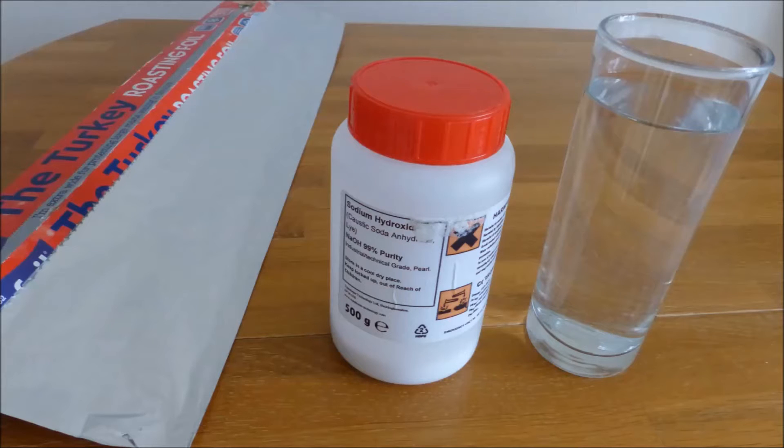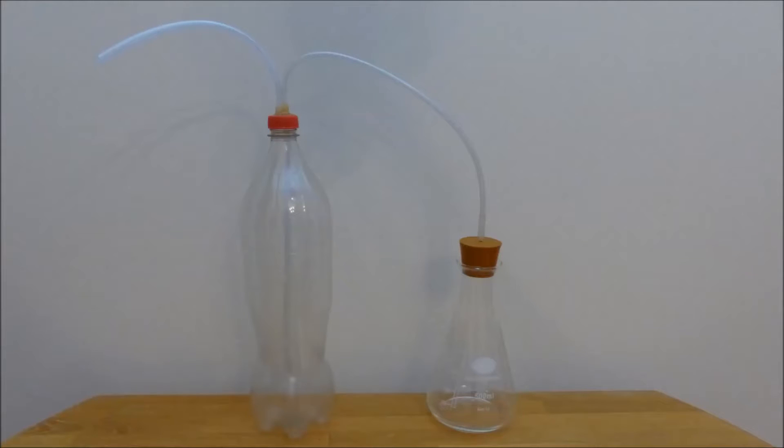To make the hydrogen we're going to use aluminium, sodium hydroxide or lye, and water. Some six millimeter or quarter inch tubing, a large soda bottle, and a heat proof flask with a rubber stopper.